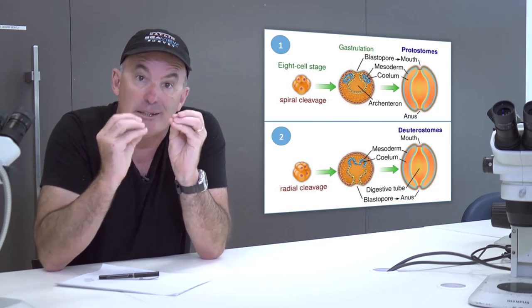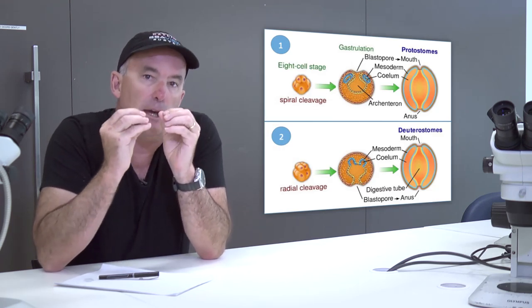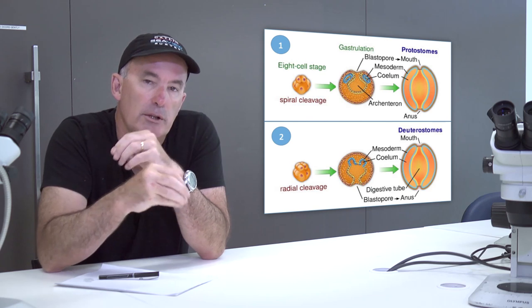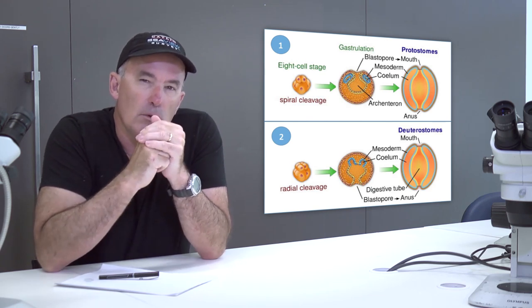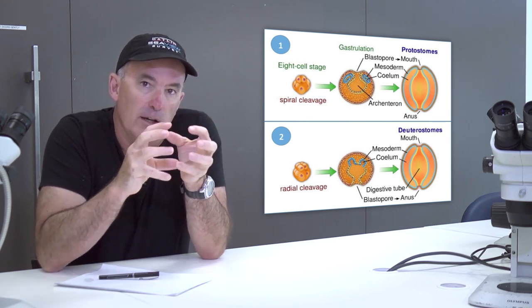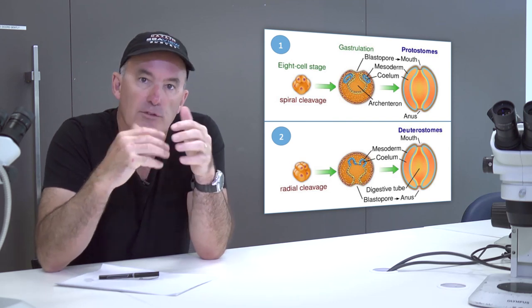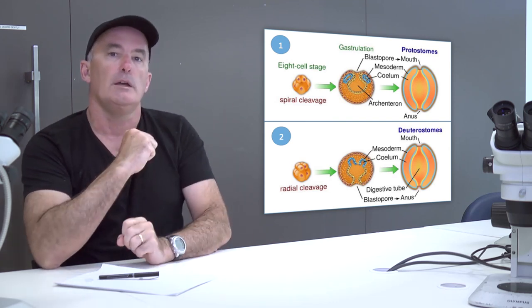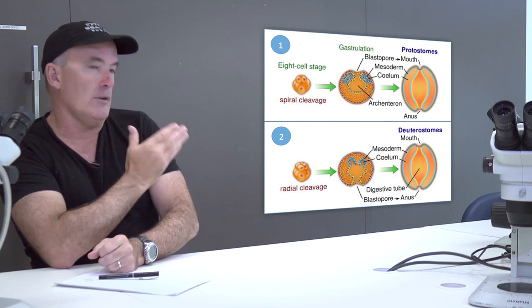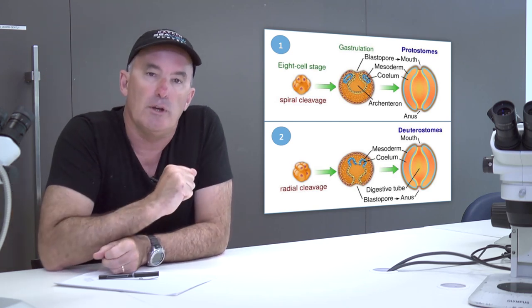Before we begin discussing the more complex invertebrates, we need to mention an important split which occurred in the animal kingdom several hundred million years ago. While all of the groups we're going to discuss now have well-developed organs and have similar ways of solving problems, it appears that there were two lines of evolution within the animal kingdom.